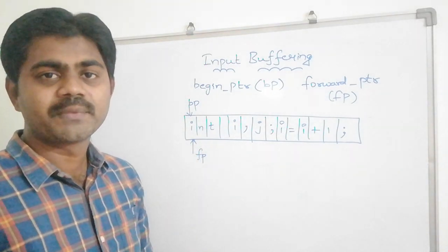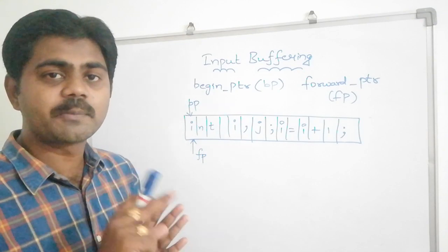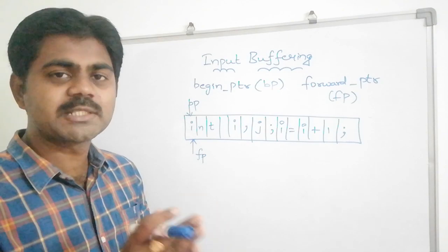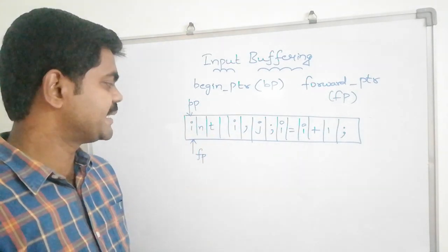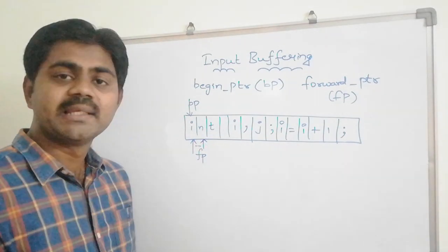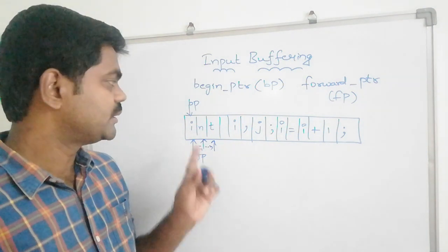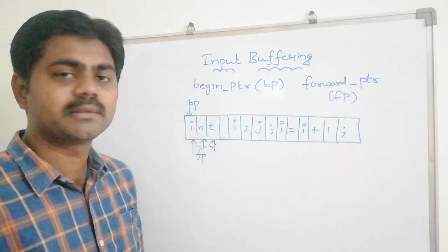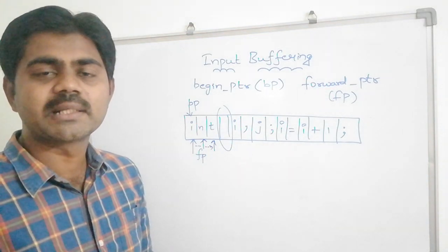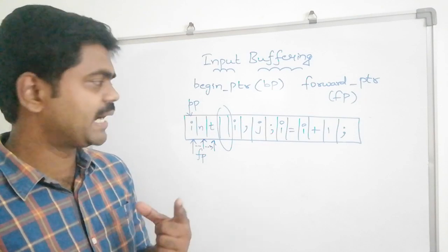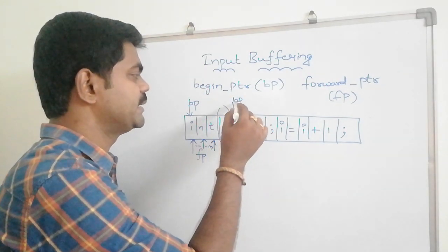Now what happens: your begin pointer will stay at that same place, while the forward pointer always moves one position to the right — FP equals FP plus one. So the forward pointer moves to 'n', then to 't'. If any blank space is encountered, your string will stop there, and both begin pointer and forward pointer point to 'i'.